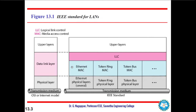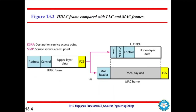We have Ethernet, token ring, and token bus media access control types, based on the various ways in which the media is accessed. Now let us move on to the evolution of Ethernet. Ethernet LAN was developed in the 1970s by Robert Metcalfe and David Boggs.